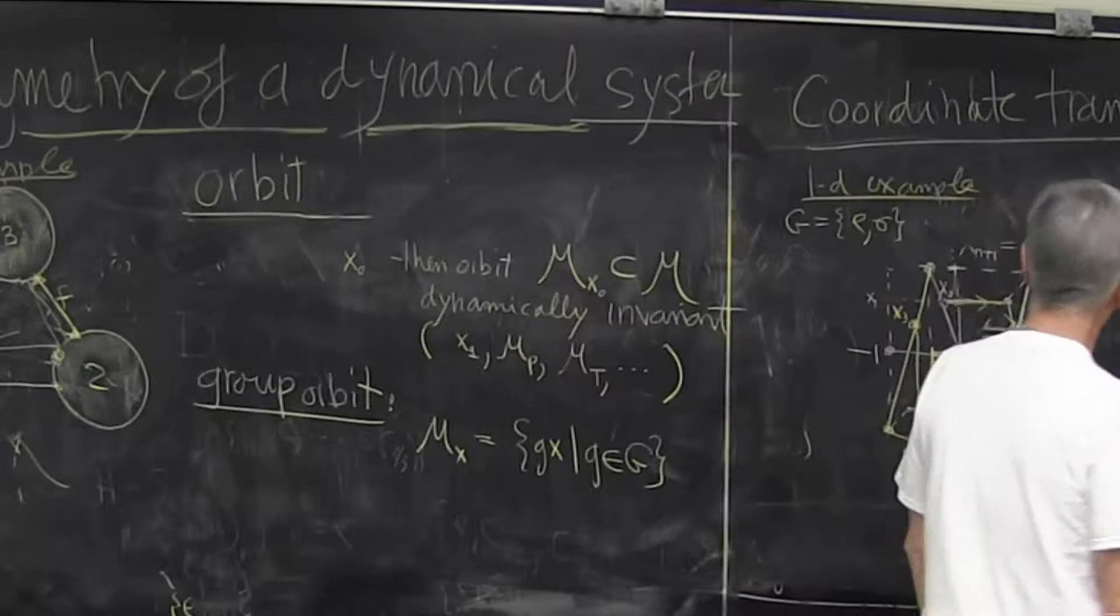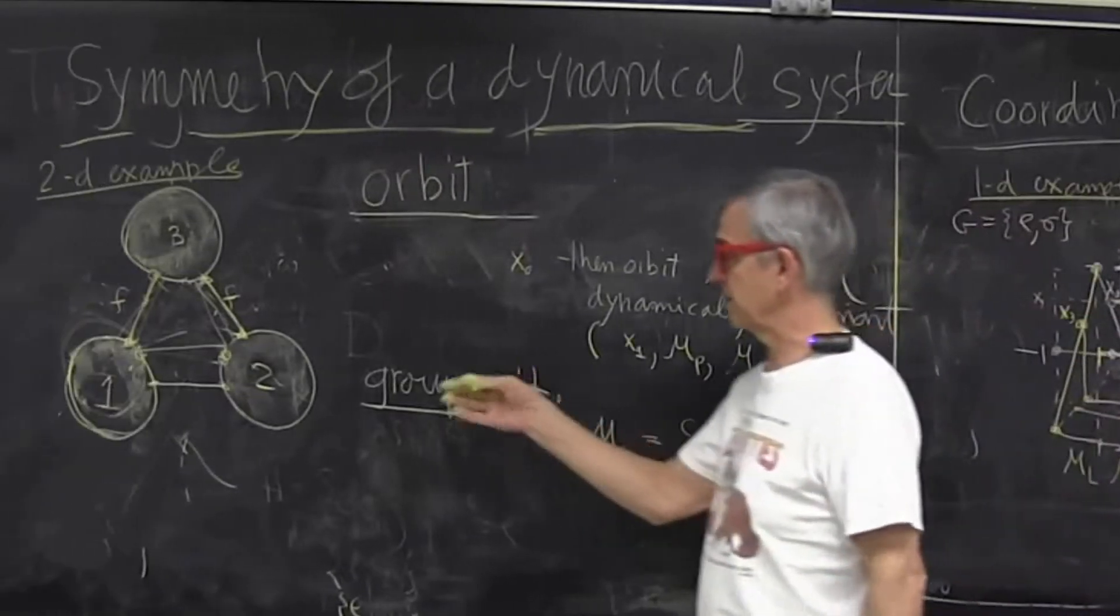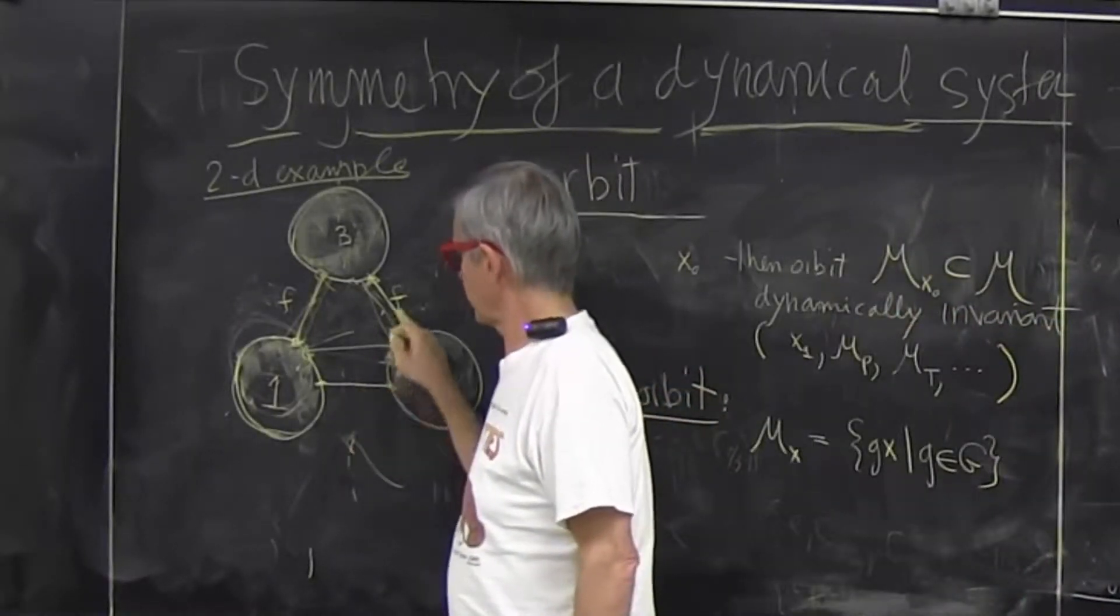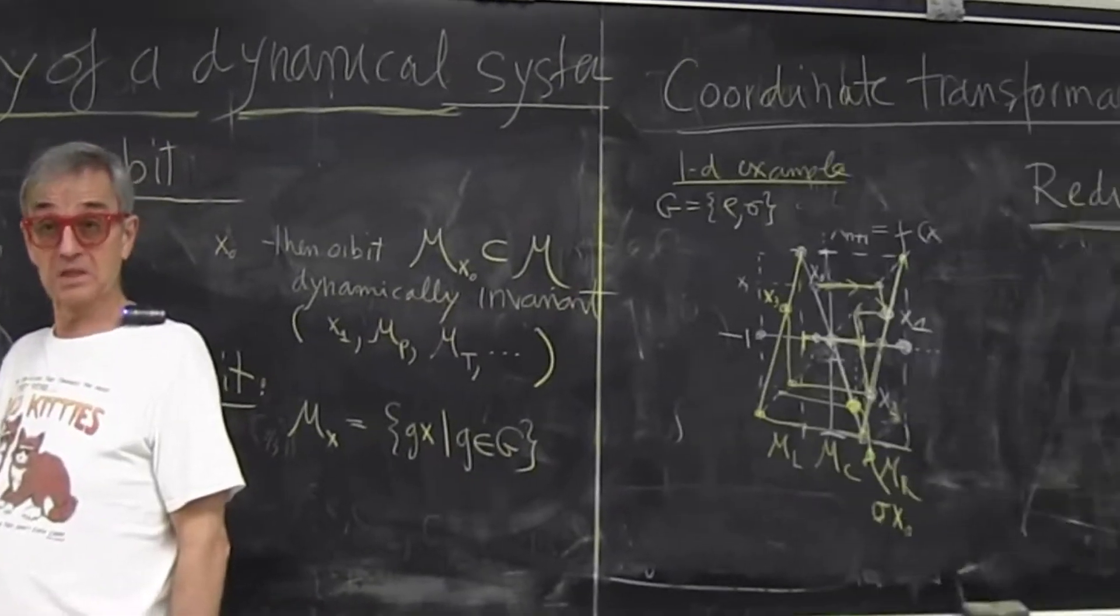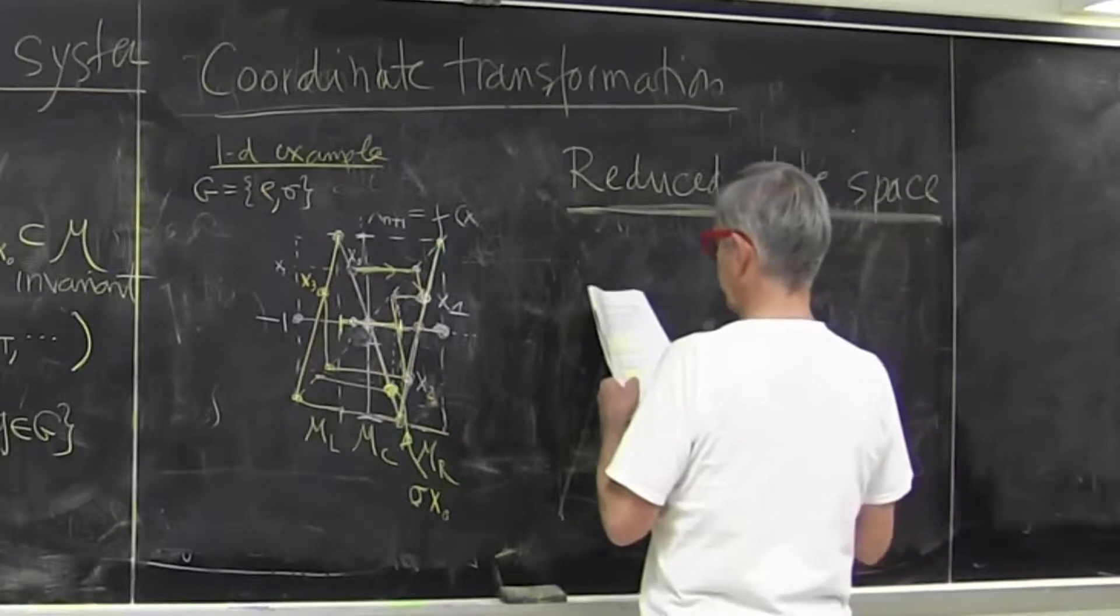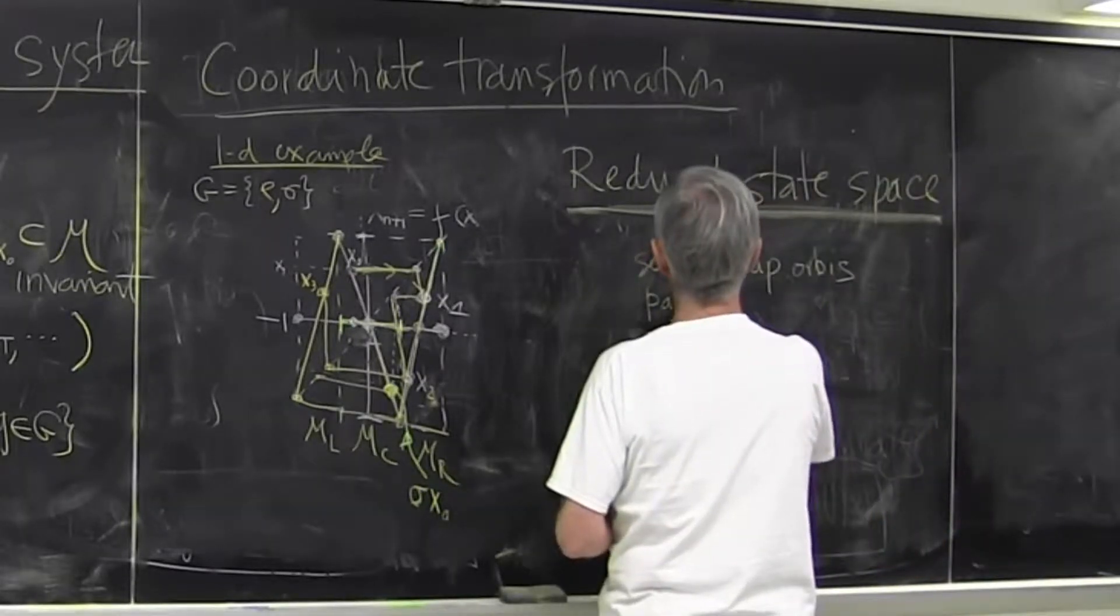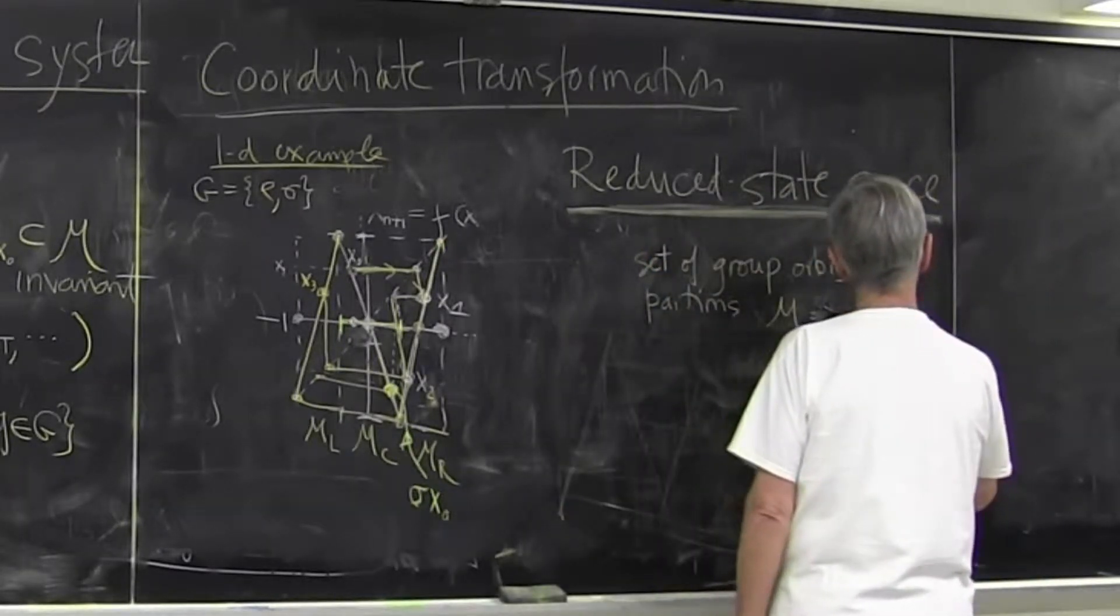So reduced state space says I'm working too hard. I don't want to list these three orbits as separate orbits. I just want to list it only one time. The set of group orbits partitions in space M quotiented by the symmetry.